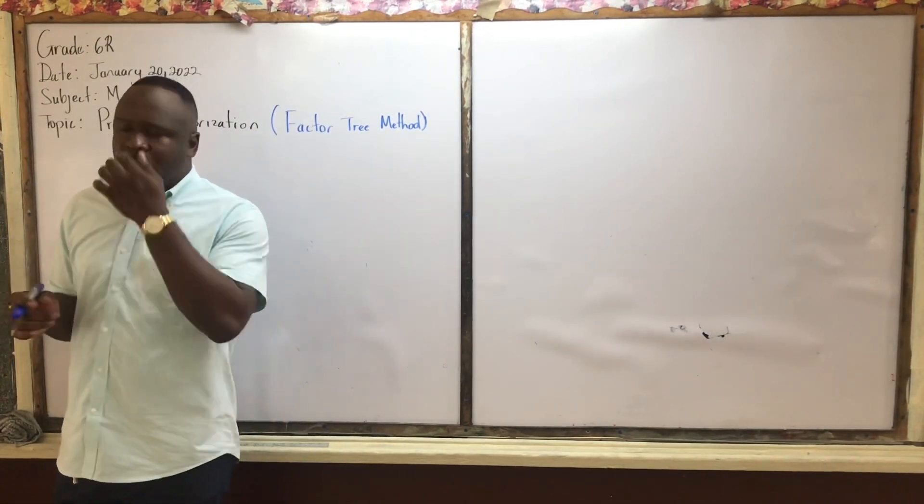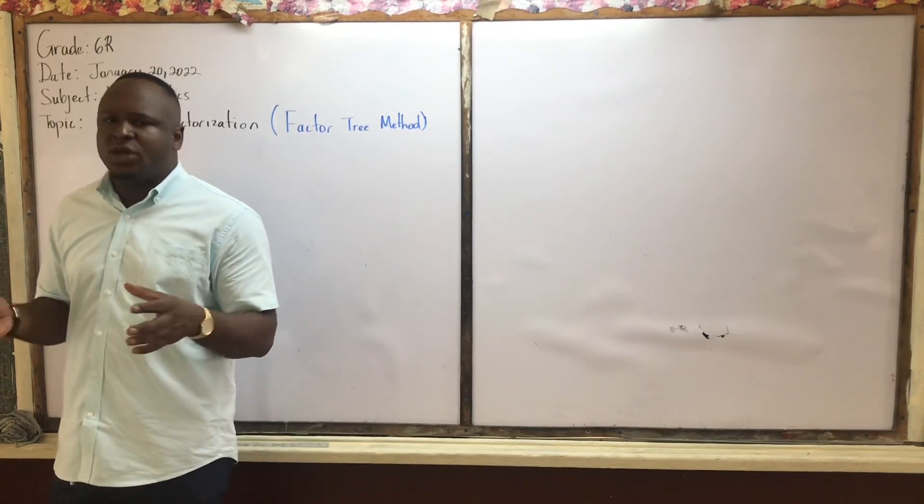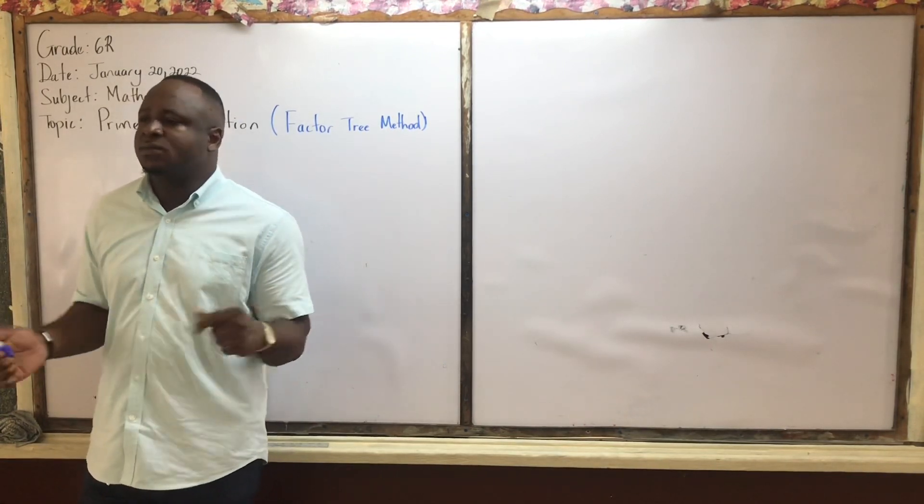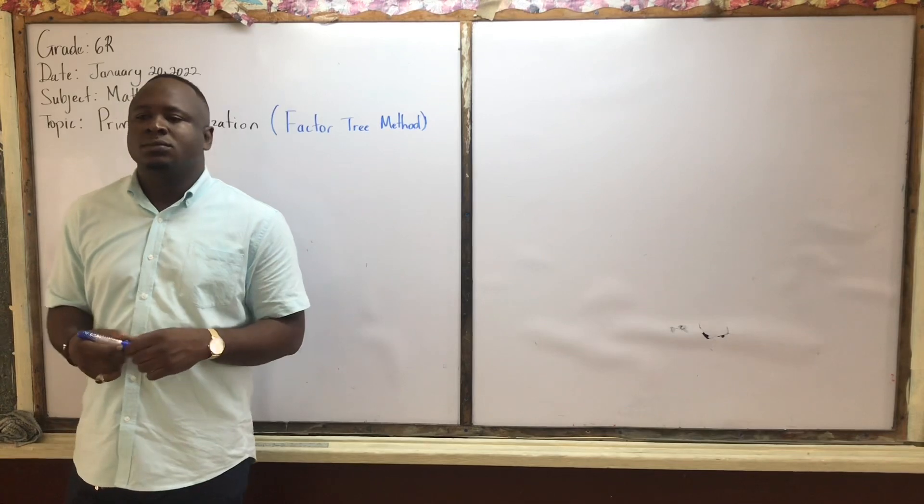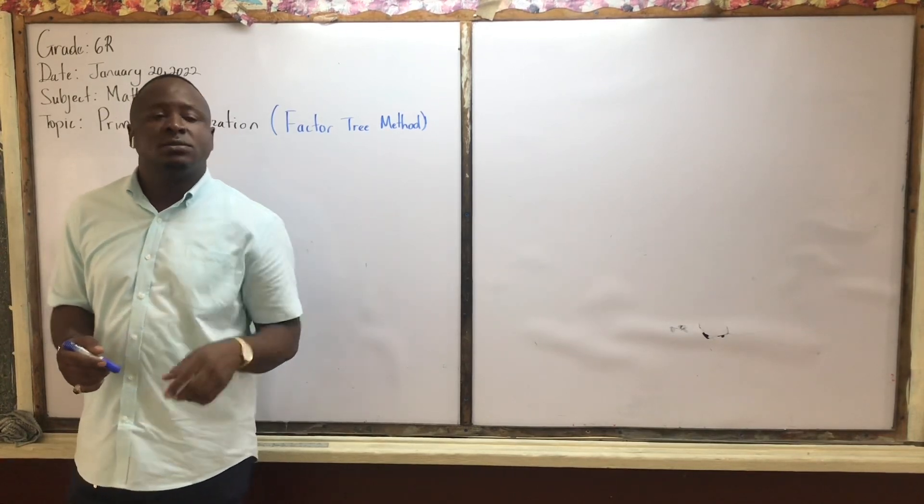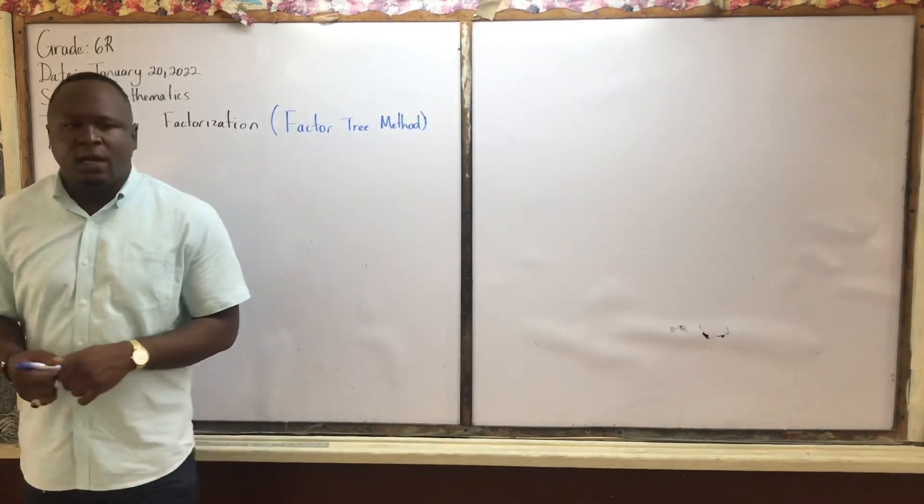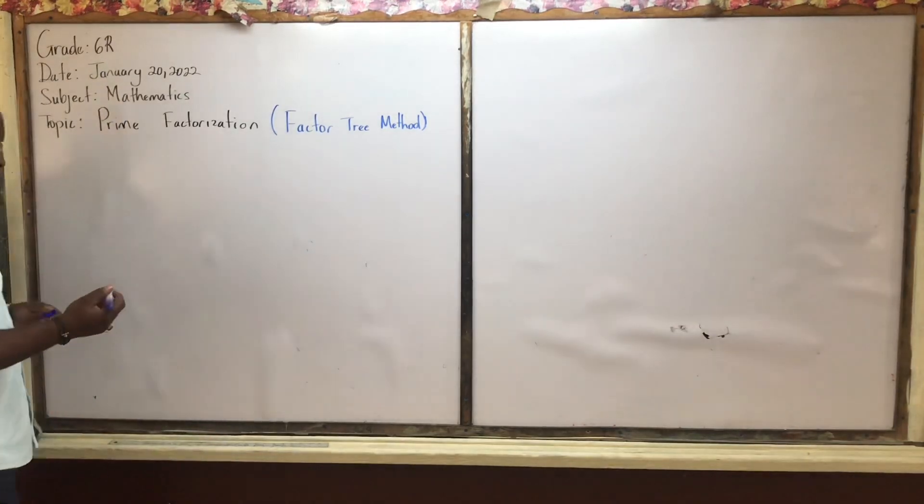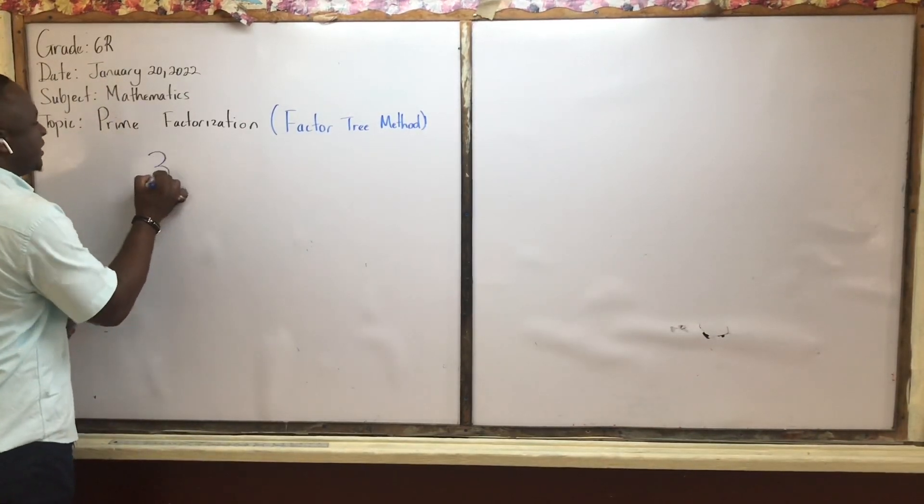All right, so the next number that we're going to try is, give me a number if you want to find the prime factors of. All right, what do we get? 36. 36. All right, so you want to try 36. So we have 36.